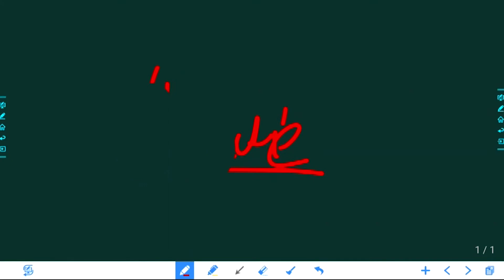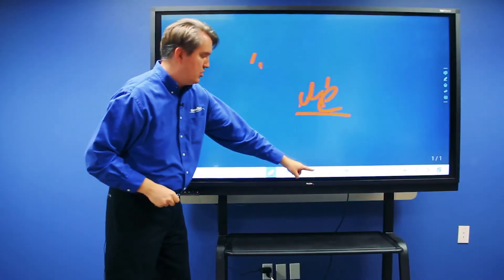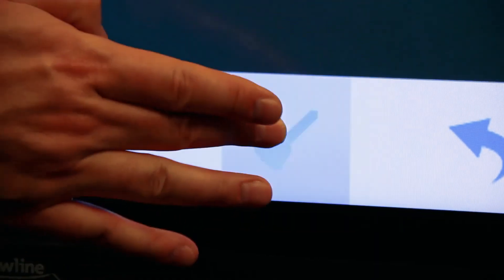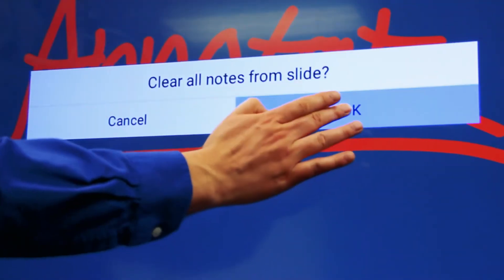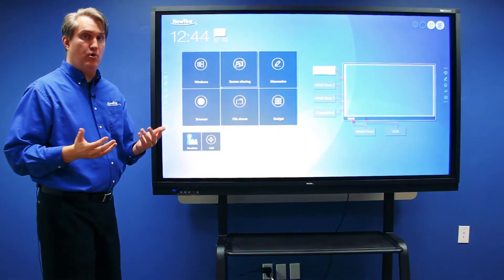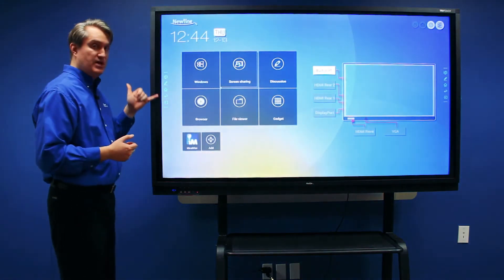And that works well. But there are also eraser tools as well as a clear screen tool. That's the broom button on the whiteboard toolbar. Another way to access the whiteboard from the home screen is using the side toolbar.